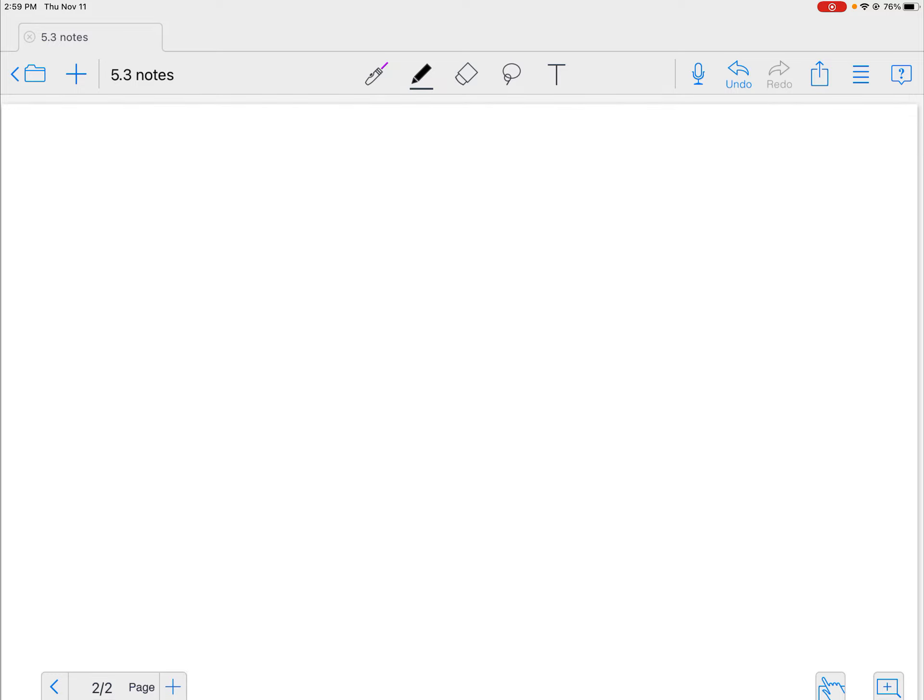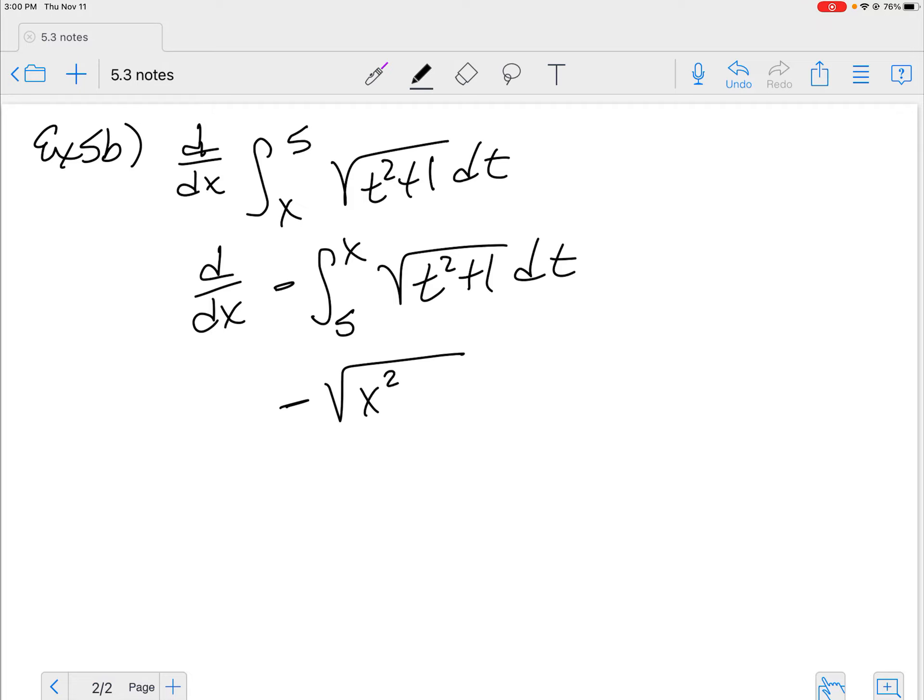Here is example 5B. This is the derivative with respect to X of the integral from X to 5 of √(T² + 1) dT. Now, where is my X now? It's on the bottom. Can't have that. The X needs to go to the top. So how do I do that? What was one of those rules that we learned? So that's going to take it to the top. We learned it in 5.2. So if I make this negative, I've got the derivative with respect to X of negative, 5 to X, because you flip the bounds and make it the opposite. Now I can plug that in. Negative √(X² + 1), and then that's all there is to it.